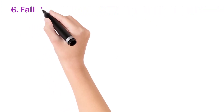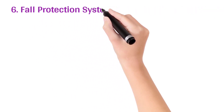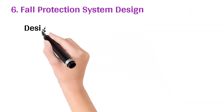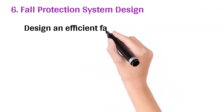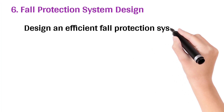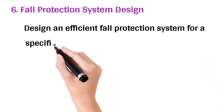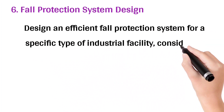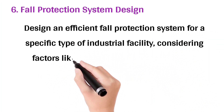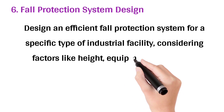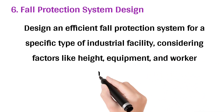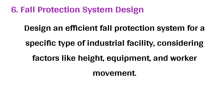6. Fall protection system design: design an efficient fall protection system for a specific type of industrial facility, considering factors like height, equipment, and worker movement.